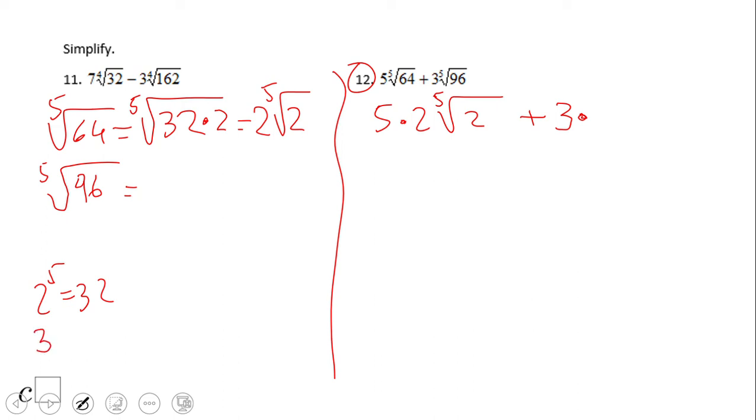So we have, again, fifth root of 32 × 3, and that will be 2 times the fifth root of 3. So 2 times the fifth root of 3, and I already noticed something.